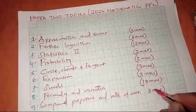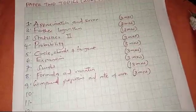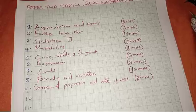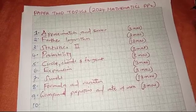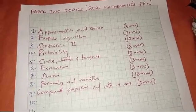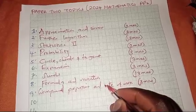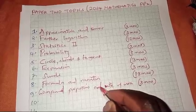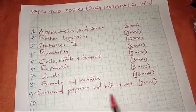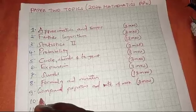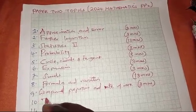The next one is compound proportion and rate of work, carrying three marks. This is where we talk about time and taps — we have some taps bringing water in and others taking water out of the tank. We also talk about mixtures.